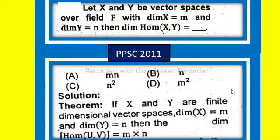In the name of Allah, the most merciful and the most beneficent. Hello everyone, welcome to Mathematics Basic to Advanced Level. In this lecture, I will solve Pakistan Publisher's Commission 2011 M6. Let X and Y be vector spaces over field F with dimension X equal to m and dimension Y equal to n.